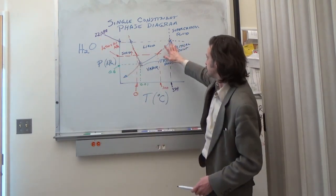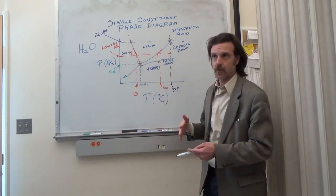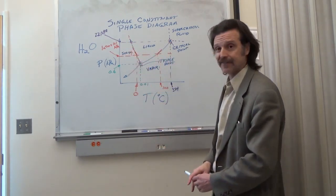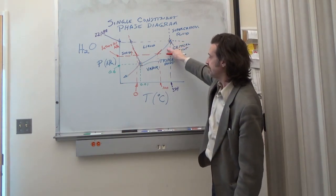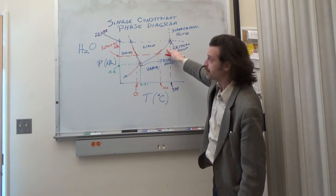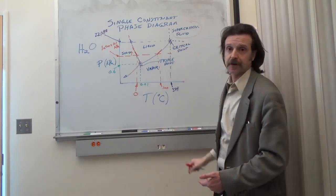So as long as you are below that you have water that behaves kind of normal. As you get above that we lose the vaporization line. It disappears. And up in this region we have what's called a supercritical fluid.